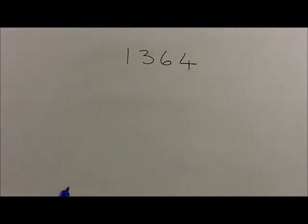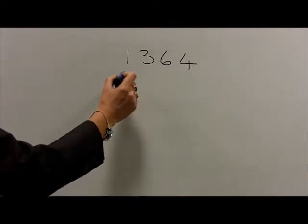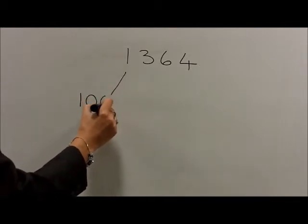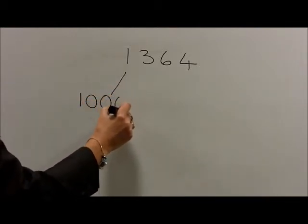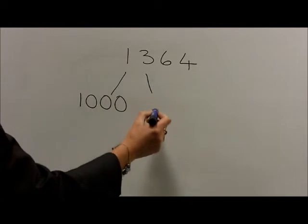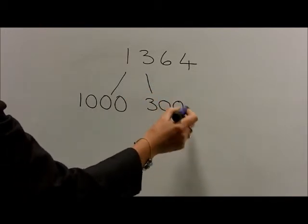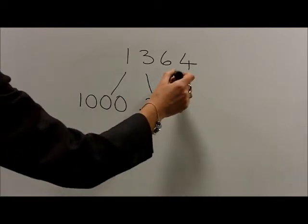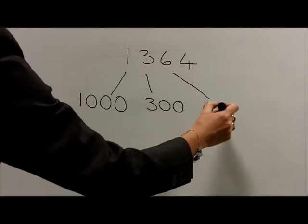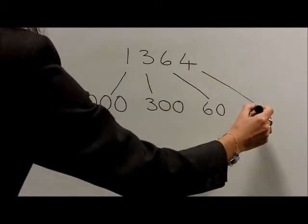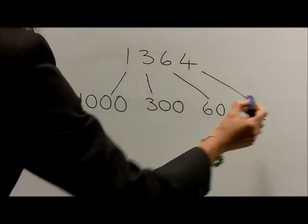With the number 1,364, this is split into the thousands, which gives us 1,000. The hundreds give us 300. The tens give us 60. And the 4 units give us 4.